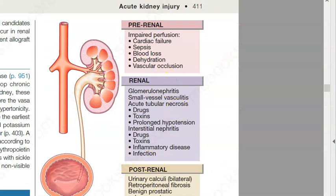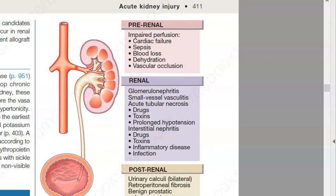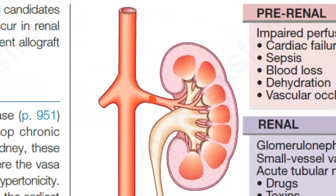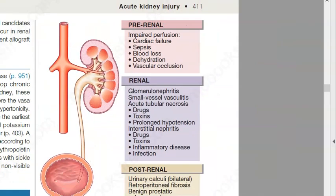Pre-renal means the input to the kidney is less, hence the urine output is less. Why is the input to the kidney less? Because the blood supply is less. Heart failure has happened so blood is not coming enough. Sepsis, blood loss — that is hypovolemia — dehydration, low blood volume, and vascular occlusion where there is some blockage in the vessel feeding the kidney. All this can lead to pre-renal acute kidney injury.